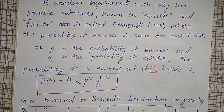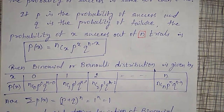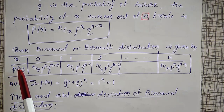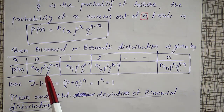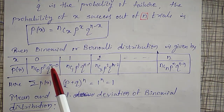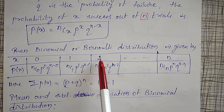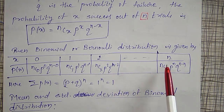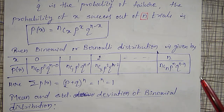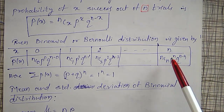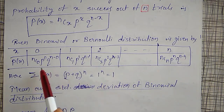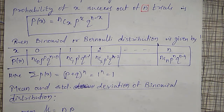To verify this is a probability function, the sum of all probabilities must equal 1. For x = 0: nC0 · p^0 · q^n; for x = 1: nC1 · p^1 · q^(n−1); and continuing up to x = n: nCn · p^n · q^0. The sum of all these probabilities falls under the binomial theorem.